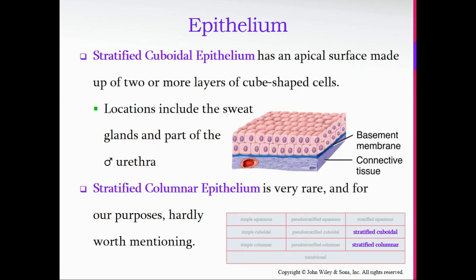Stratified cuboidal consists of multiple layers of cube-shaped cells, with an apical surface made up of two or more layers. Locations include the sweat glands and part of the male urethra. Stratified columnar epithelium is very rare and for our purposes hardly worth mentioning.